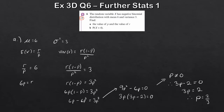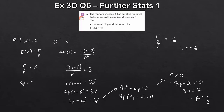Once we've worked out p, we can easily find r. Substituting p = 2/3 into r over p equals 6: r = 6 times (2/3), which gives r equals 4. So that's part A done — p = 2/3 and r = 4.